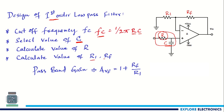Since it is a non-inverting amplifier, the passband gain Av = 1 + Rf/R1. We need to use this expression alongside the cutoff frequency formula. If C is not given, we assume it and calculate all the resistor values — that process is called designing the low pass filter.